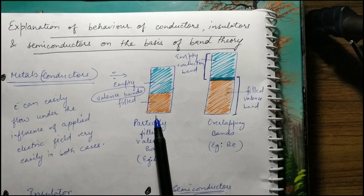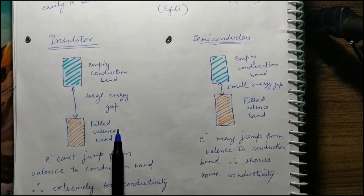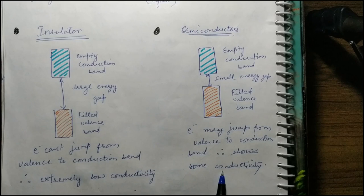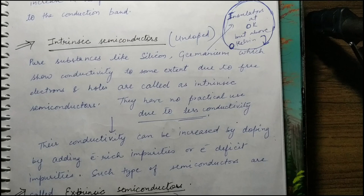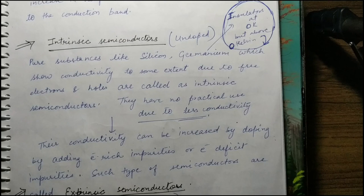For insulators, the energy gap between valence band and conduction band is very large, so conduction does not occur. For semiconductors, the gap is smaller, so some electrons can jump across and show a bit of conductivity. We studied three types of electrical conductivity: conductors, insulators, and semiconductors, each with their own range. Semiconductors are of two types: intrinsic and extrinsic.